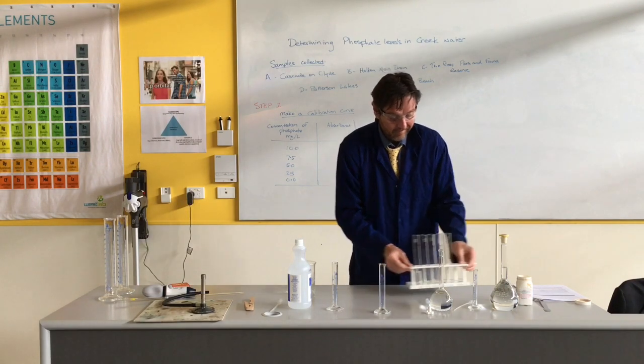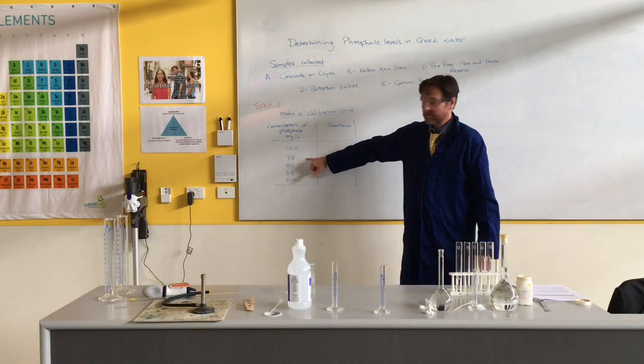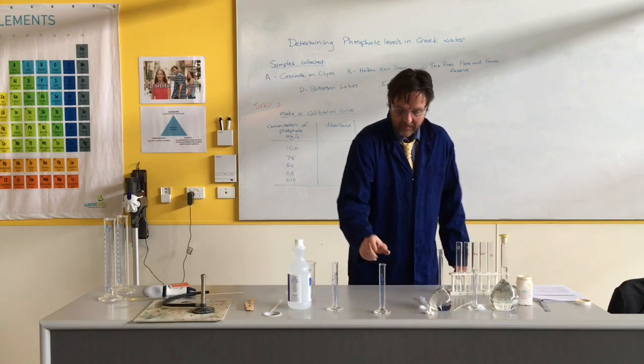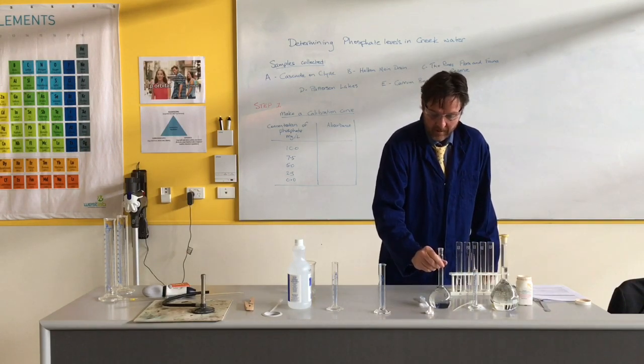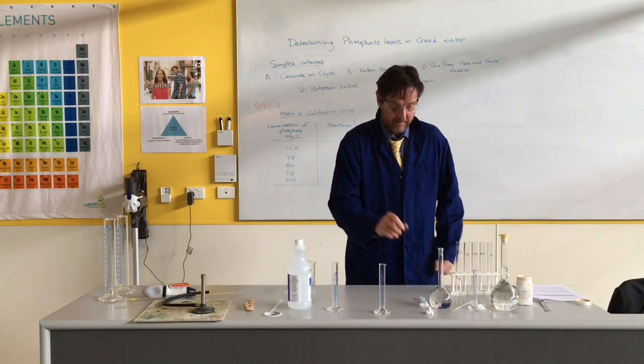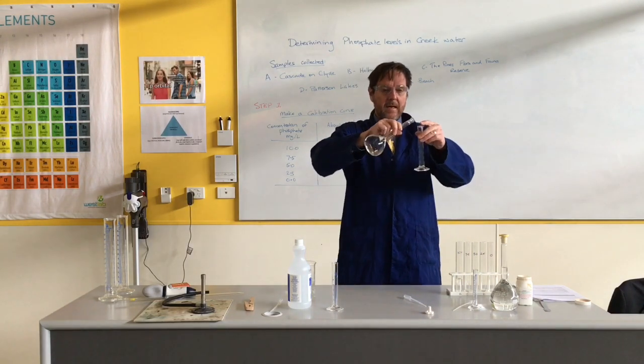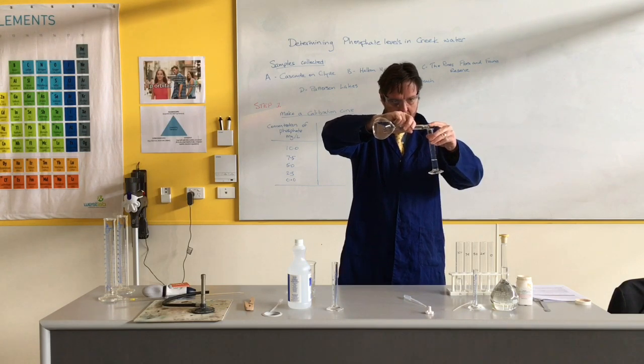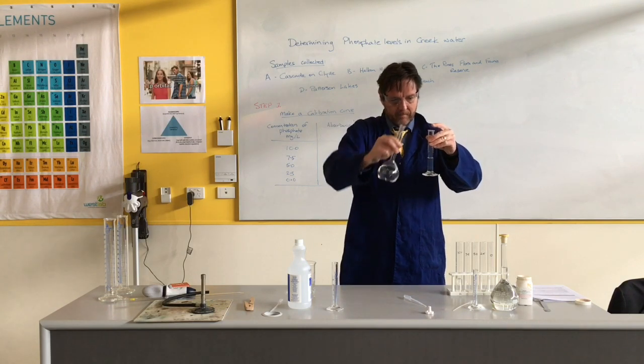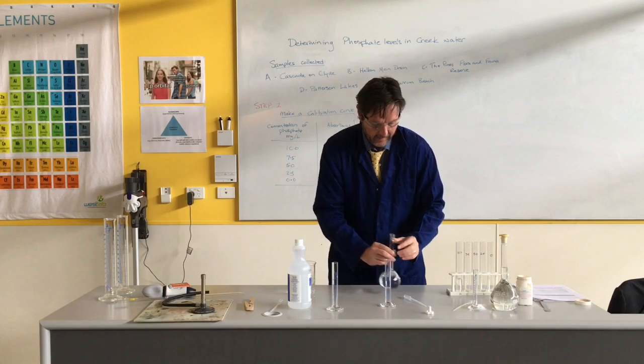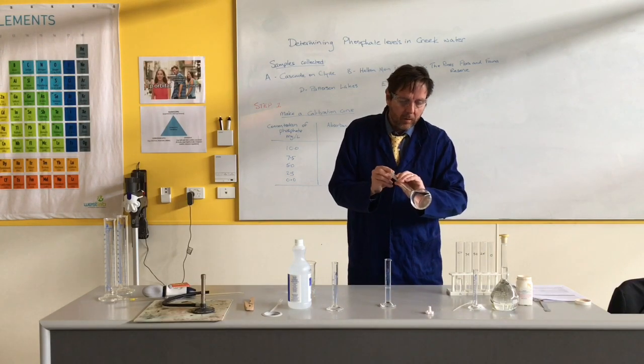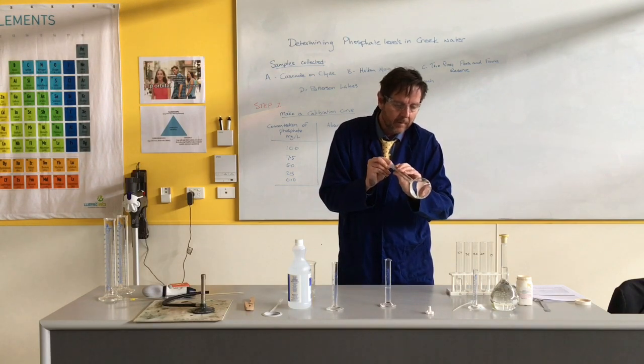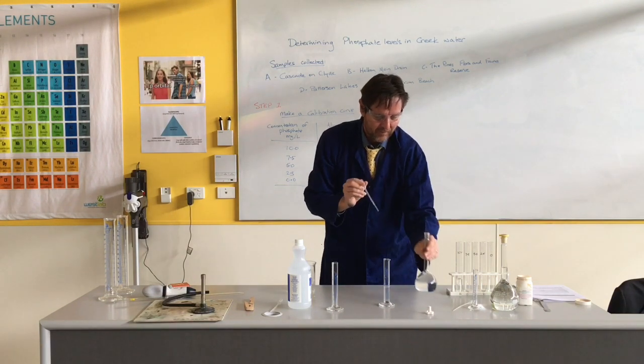For the next one, I want to dilute this down to get it to 7.5 milligrams per litre. So this time, instead of getting 20 mils of this stuff, I'm only going to get 15 mils. So once again, I'm going to pour in here just short of 15, there you go, just short of 15, and I'm going to get it as close as humanly possible to 15 with my dropping pipette.